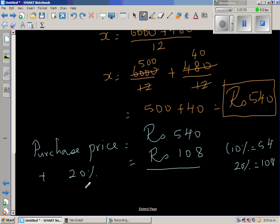And this is the sale price. The sale price is the purchase price plus 20%, which is 648. So our answer is right.